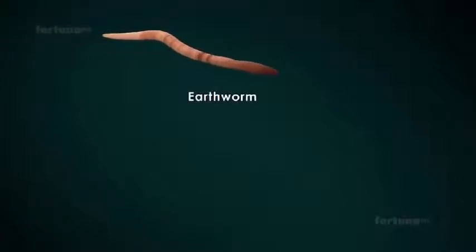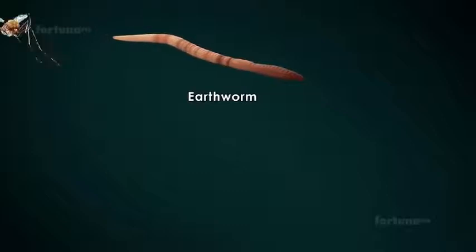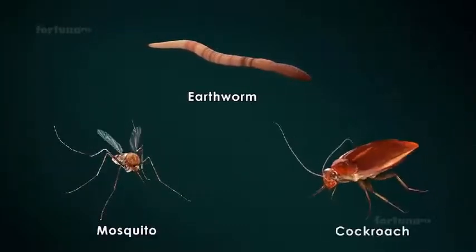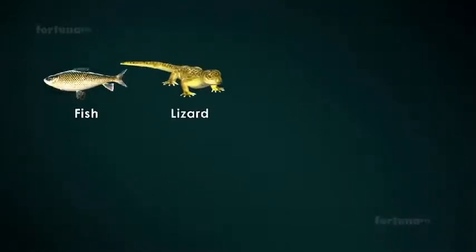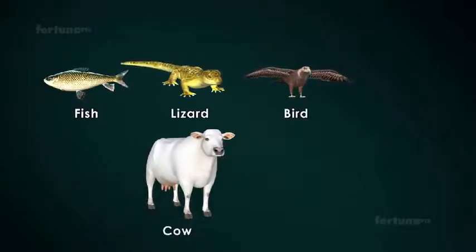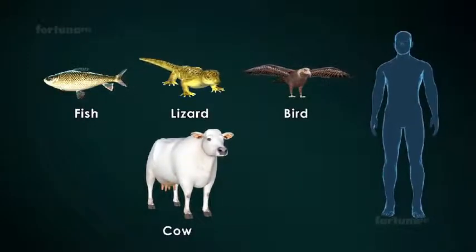Kingdom Animalia includes animals without bones, such as the earthworm, and insects such as the mosquito and cockroach. It also includes animals with bones, such as fish, lizards, birds, cows, and humans.